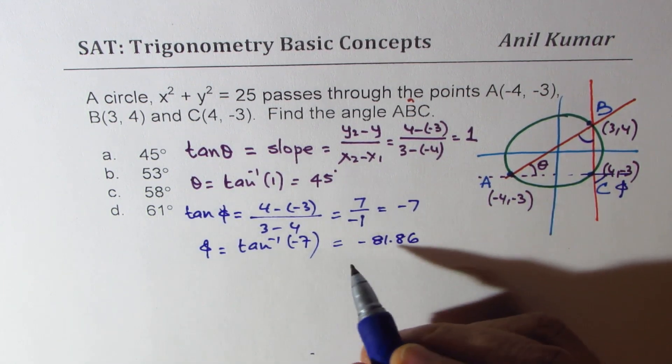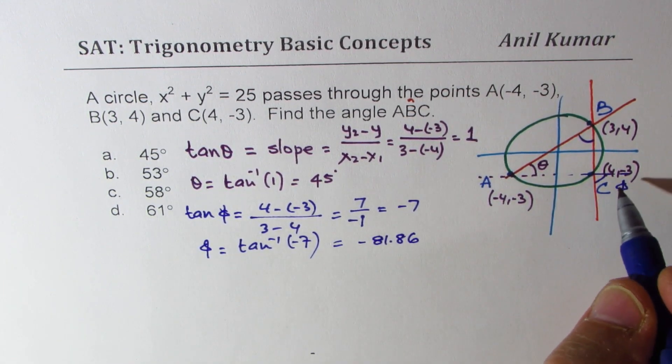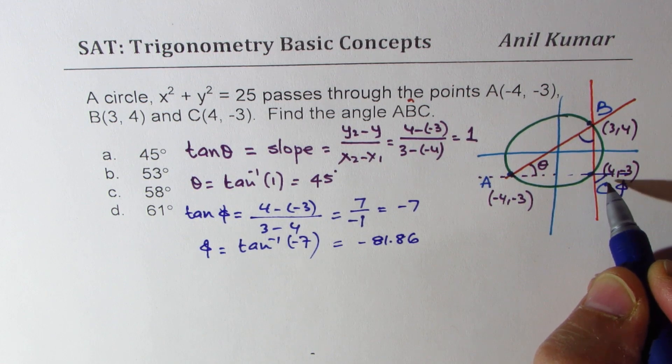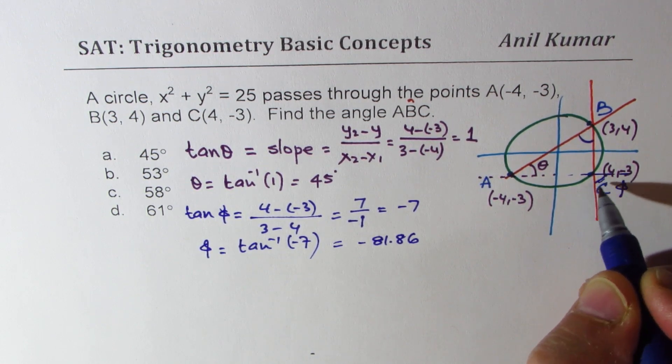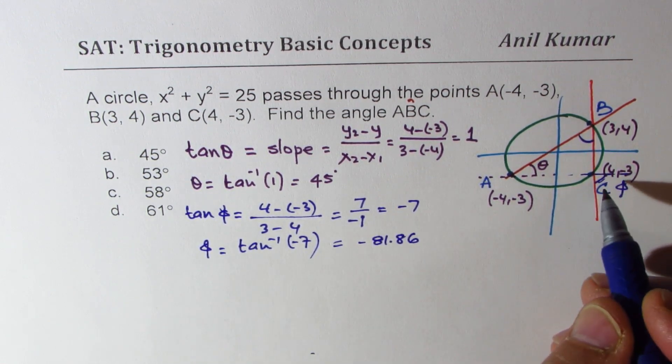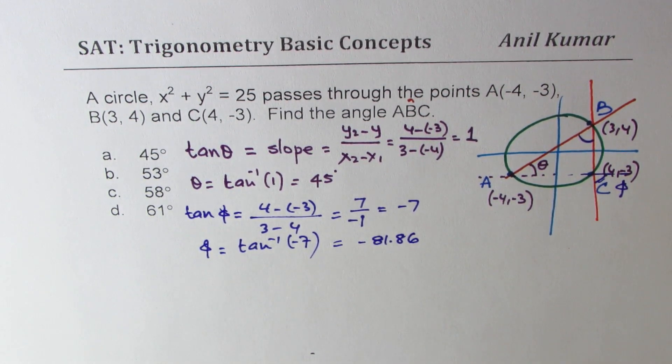So we get the angle which is -81.86. Okay, so -81.86 means it is in quadrant 4, right? So as I marked here, so that is the angle 81.86 in quadrant 4.